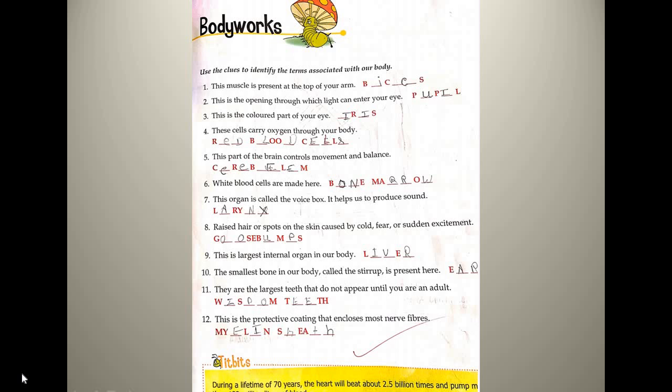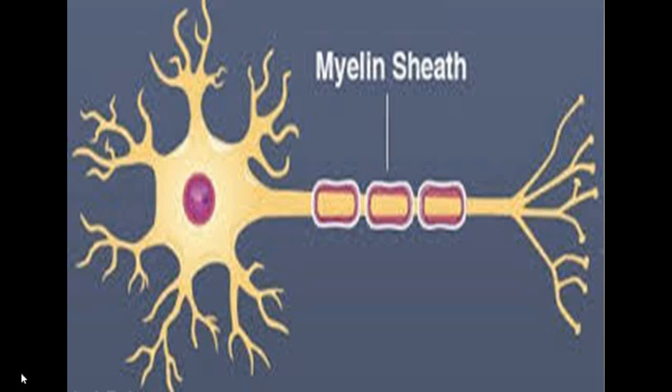The next question: this is the protective coating that encloses most nerve fibres. Inside your brain there are several nerve cells in the form of fibres. The sheet which coats that fibre is myelin sheath — M-Y-E-L-I-N S-H-E-A-T-H. This is a nerve cell present in your brain and the fibrous part is covered with a shield known as myelin sheath.